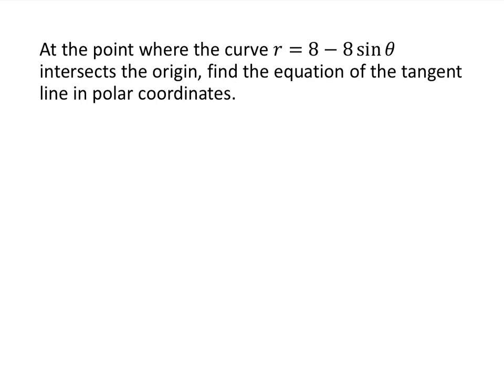The second part asks: at the point where the curve r equals 8 minus 8 sine theta intersects the origin, find the equation of the tangent line in polar coordinates. First we need to find what theta is at the origin, where r equals 0. Setting 8 minus 8 sine theta equal to 0 gives sine theta equals 1, so theta equals π/2 (for theta between 0 and 2π).